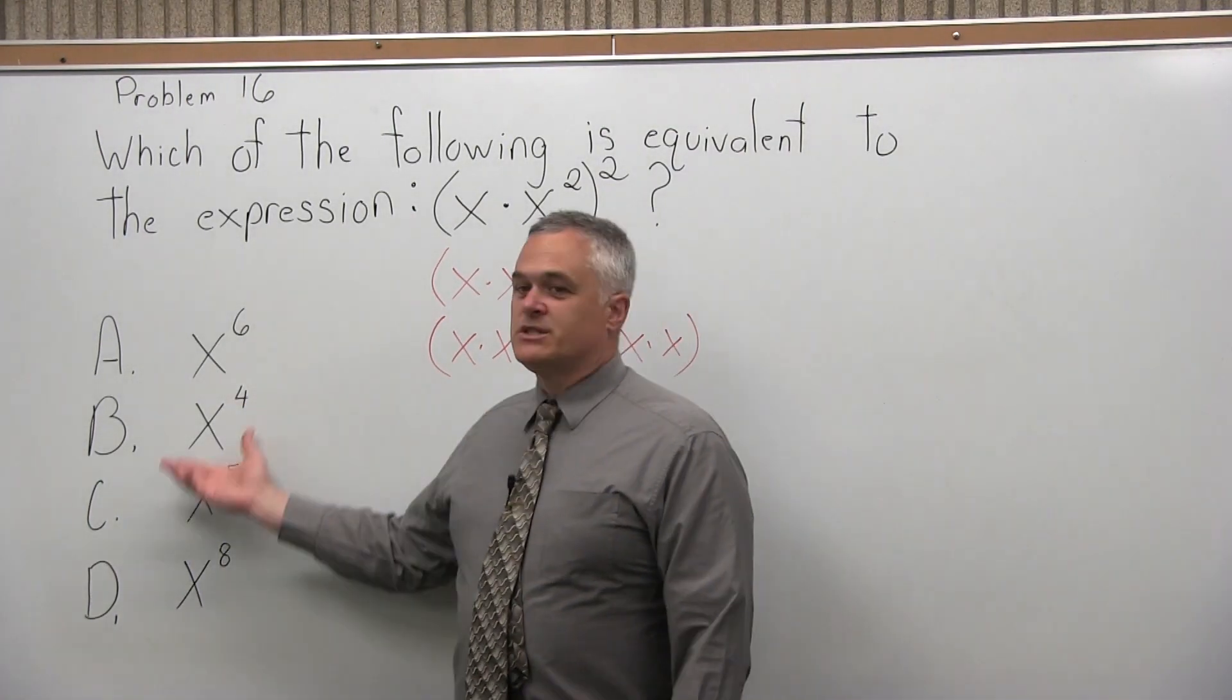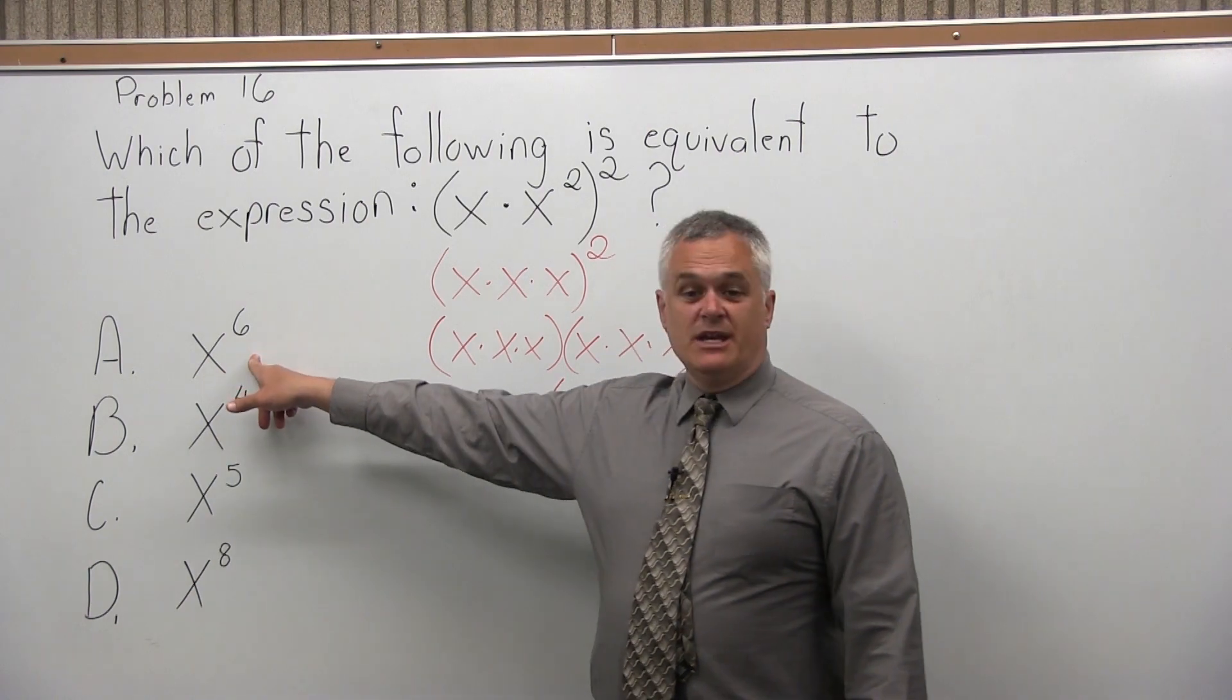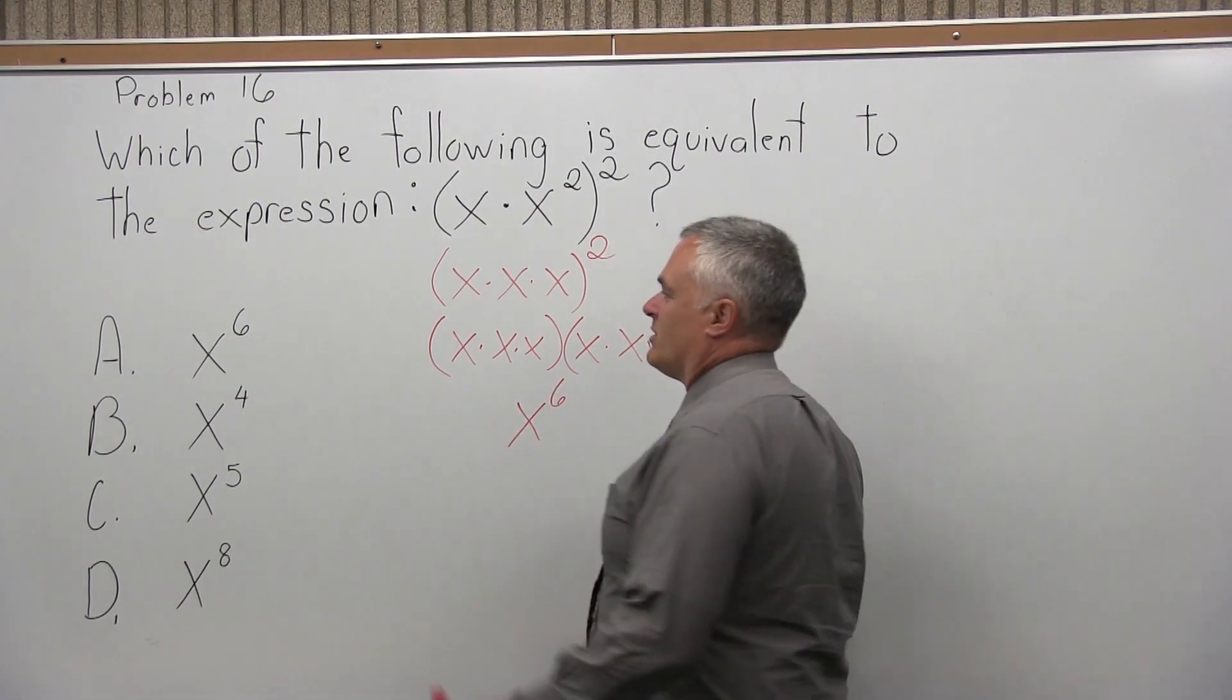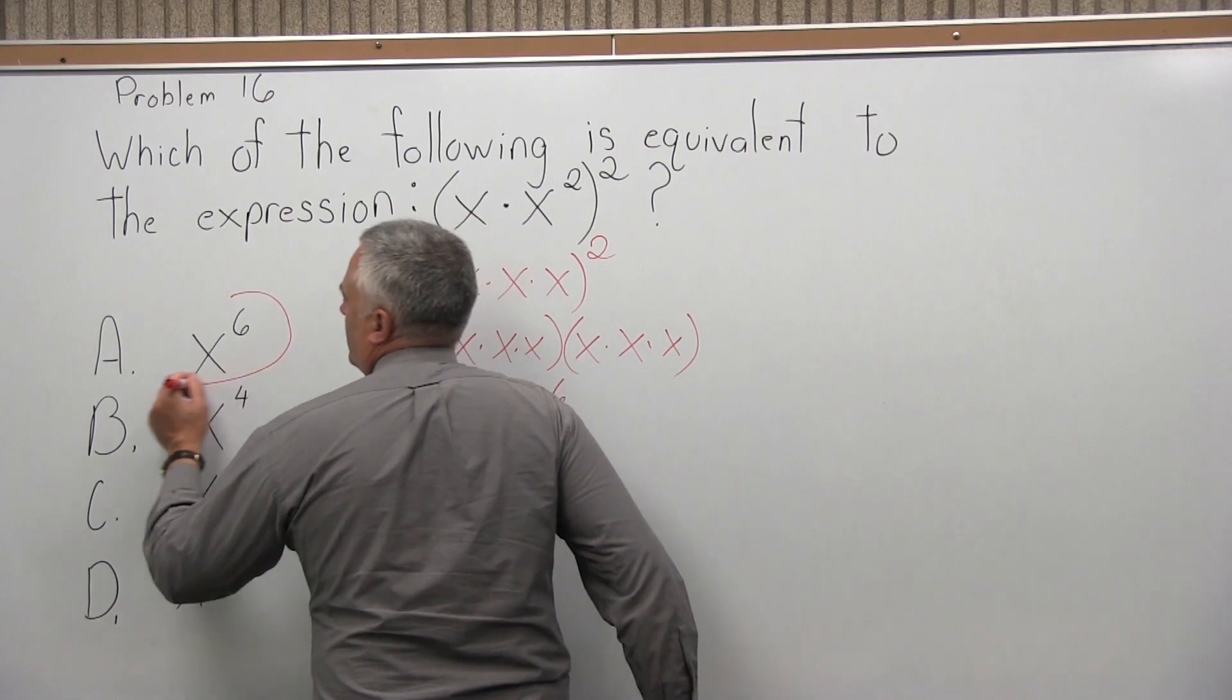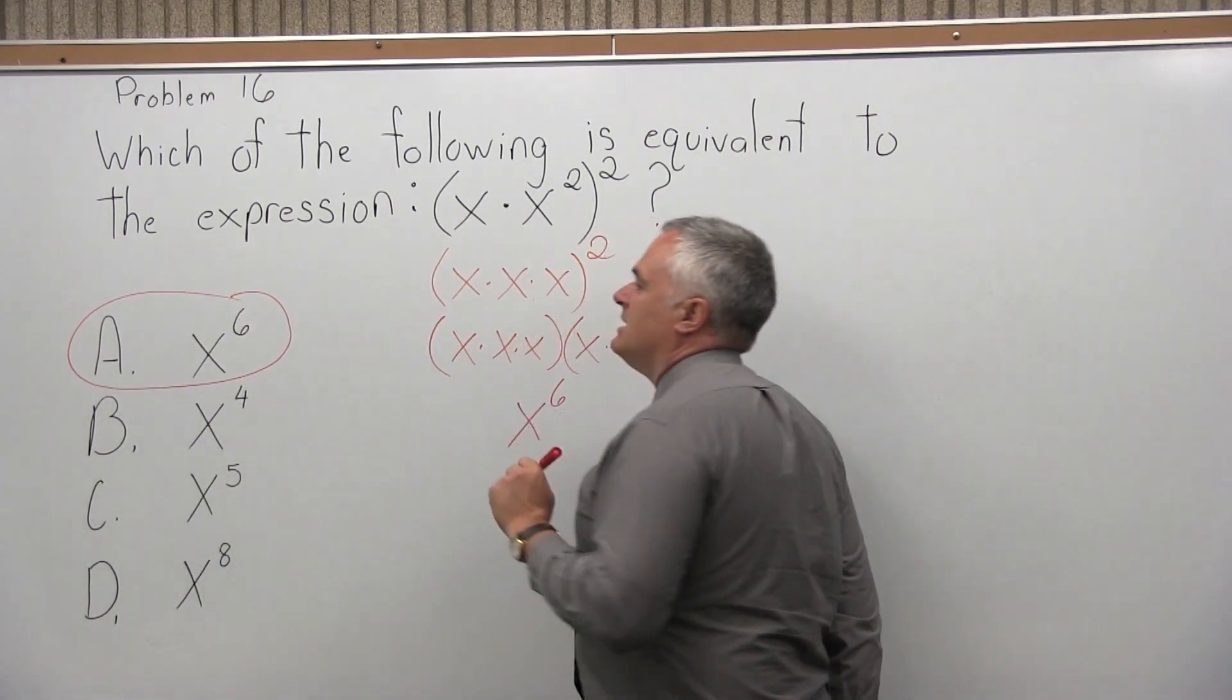So now when I go back to my list of options, option A is x to the sixth power, which is the same as I got with my work, so the answer to problem 16 is option A.